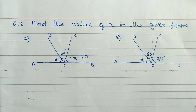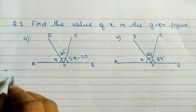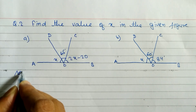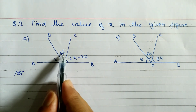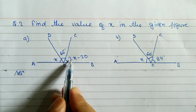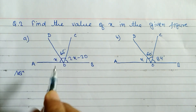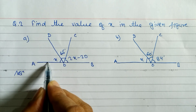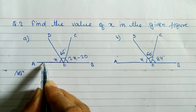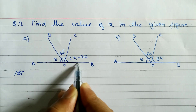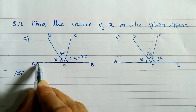In this video we will learn how to find out the value of x. These questions are taken from the angles chapter. When you add three angles and get 180 degrees, it is because they are supplementary angles — you can see here this is a straight line.